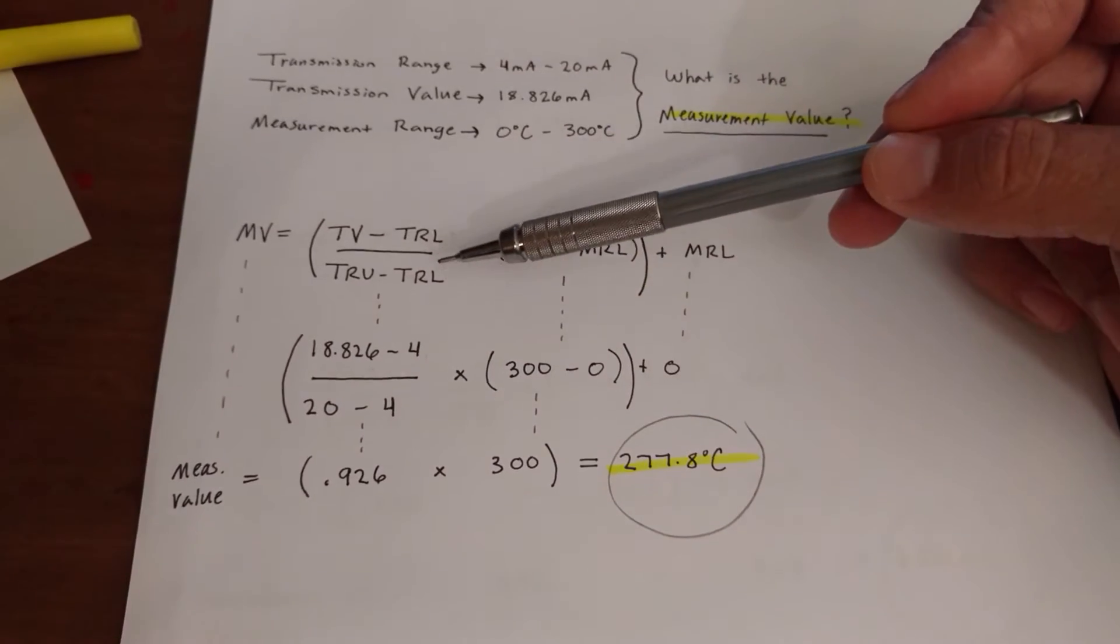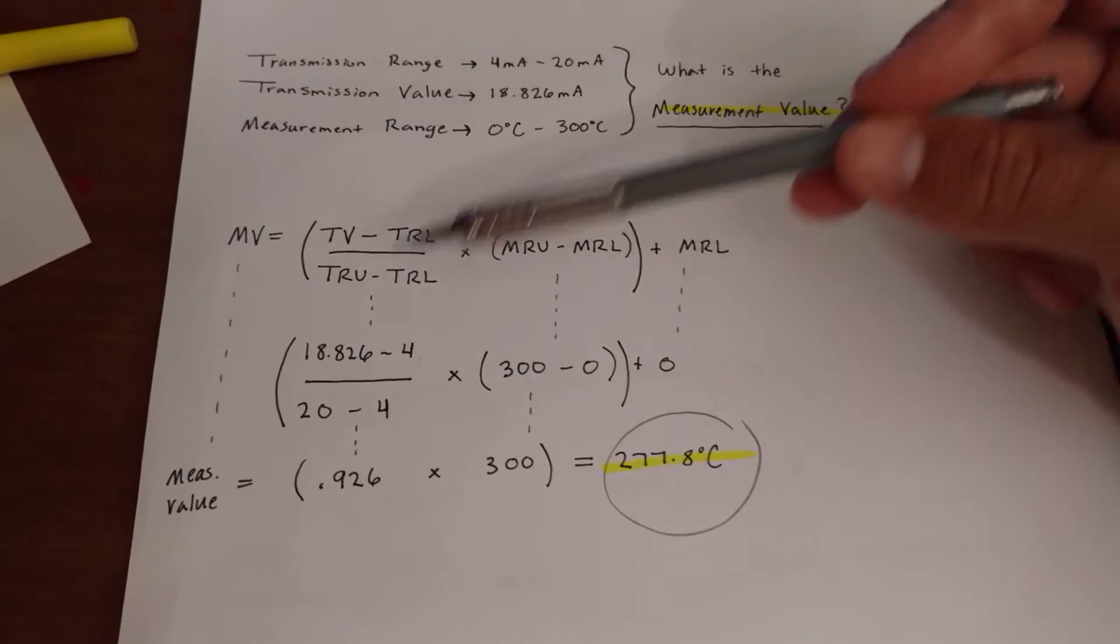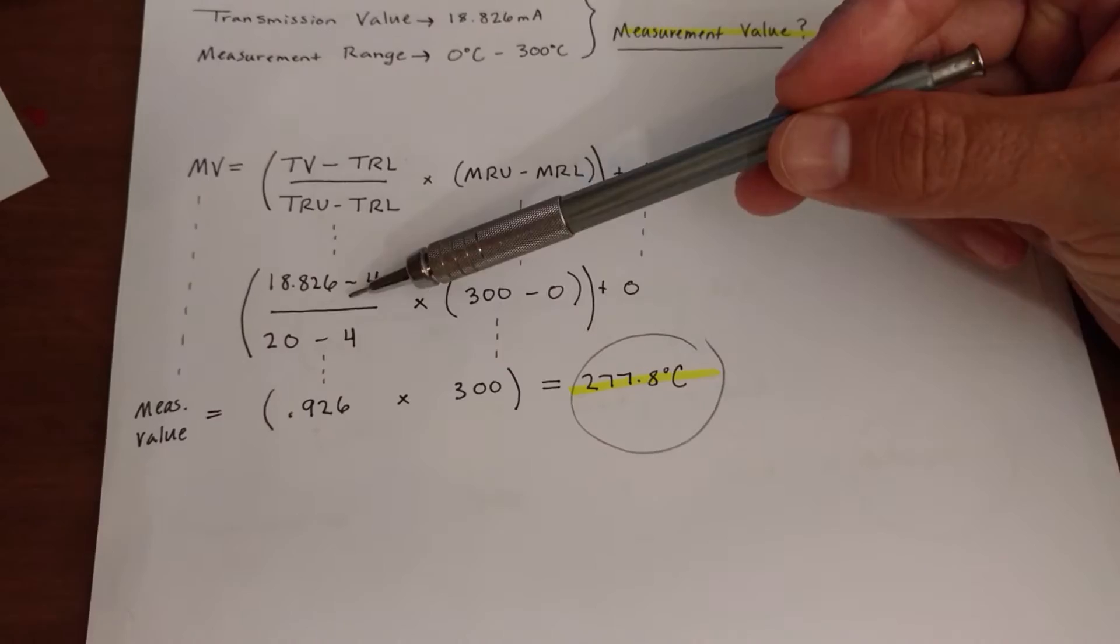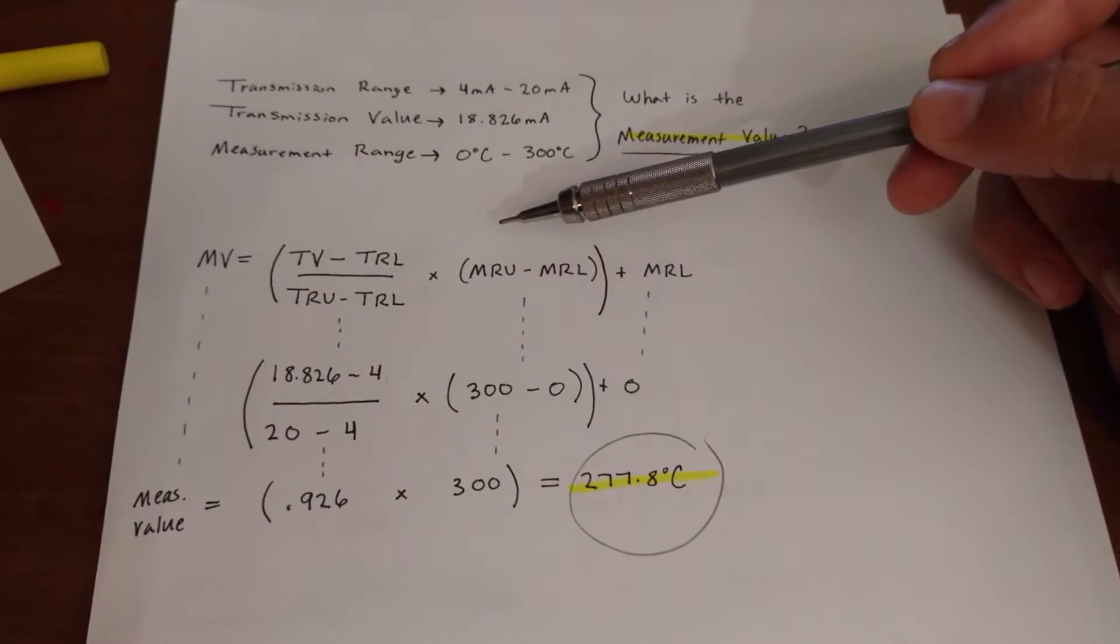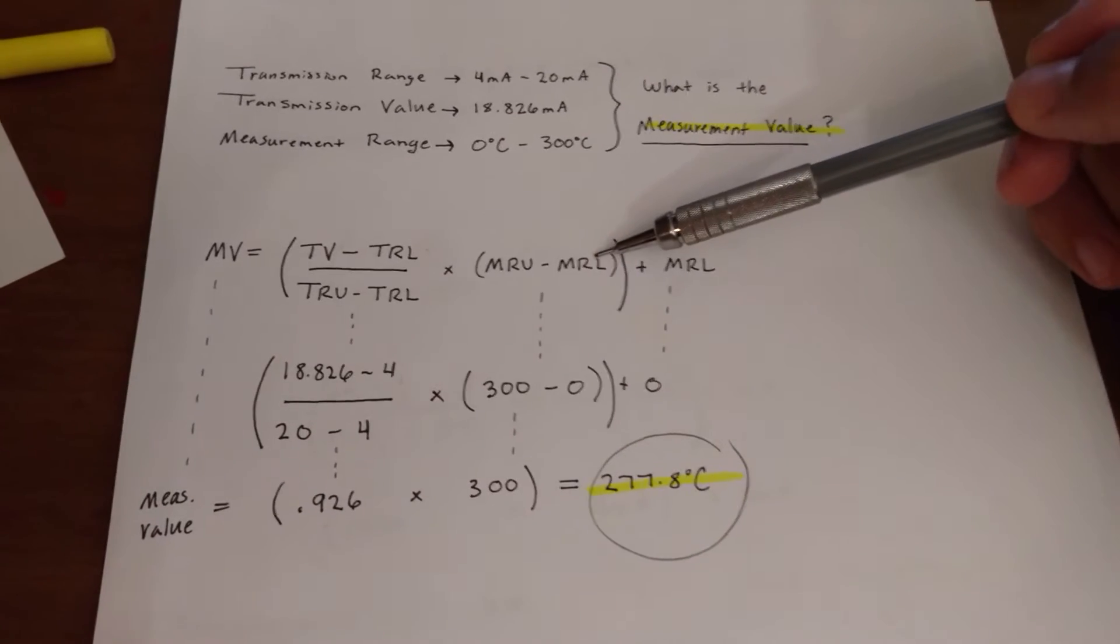And then transmission range upper and transmission range lower. You're subtracting those, so upper and lower. Okay, then you're going to multiply whatever that is,